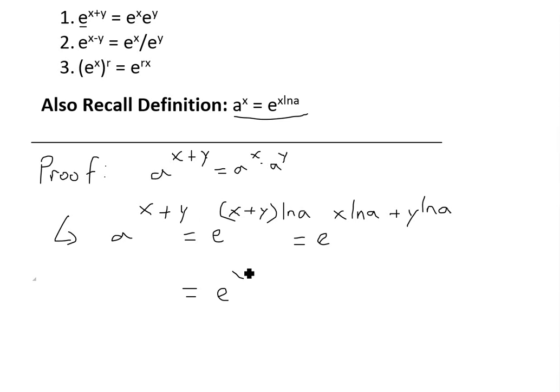This is going to be now e to the power of x ln a times e to the y ln a right here. So this is an x right here.